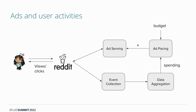Any user activity is recorded and processed by the event collection platform. This data is then aggregated, validated, and fed back into the ad serving system via ad pacing. This is a feedback loop where the user activity flows back into ad serving, which impacts the ad serving to the same user.